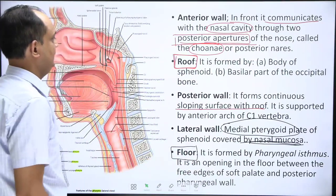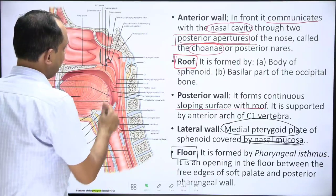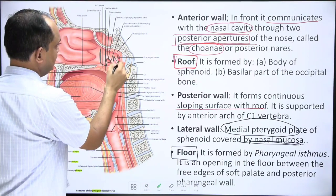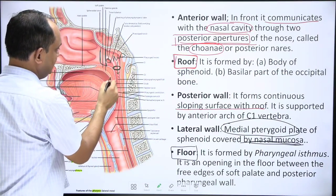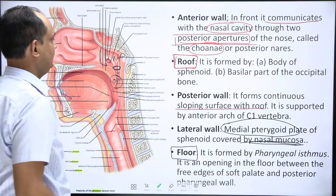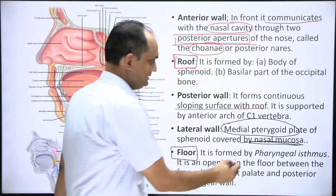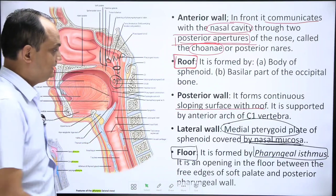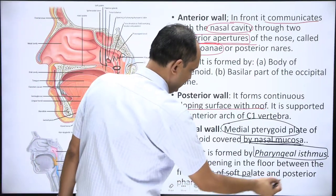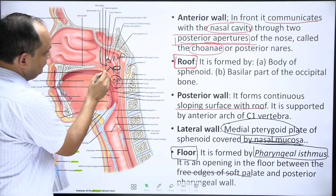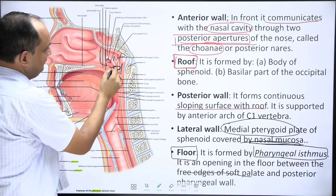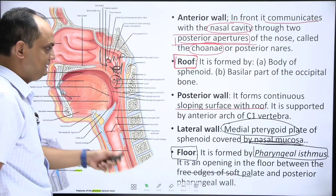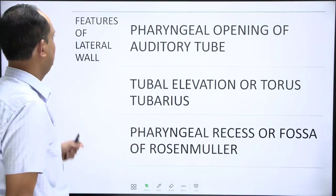The floor of the nasopharynx is formed by the pharyngeal isthmus. The pharyngeal isthmus is the gap through which the nasopharynx communicates with the oropharynx. It is an opening in the floor lying between the free edge of the soft palate and the posterior pharyngeal wall — a very commonly asked question in viva exams.